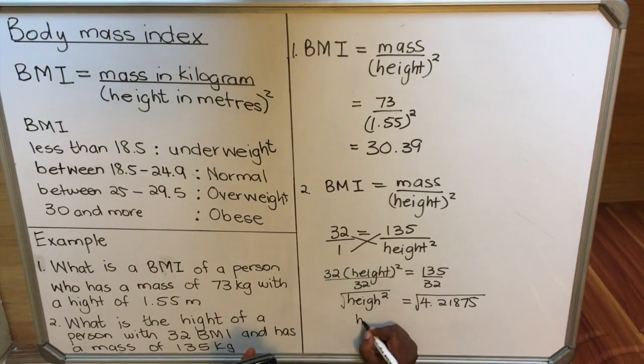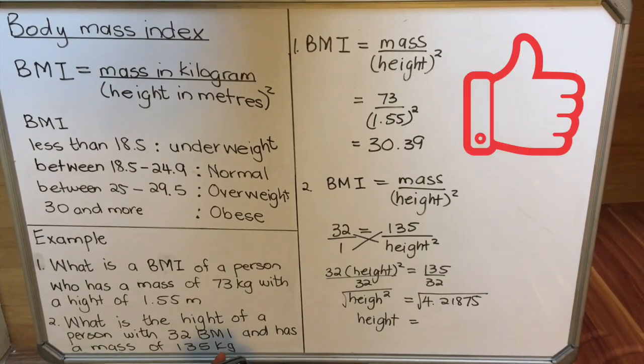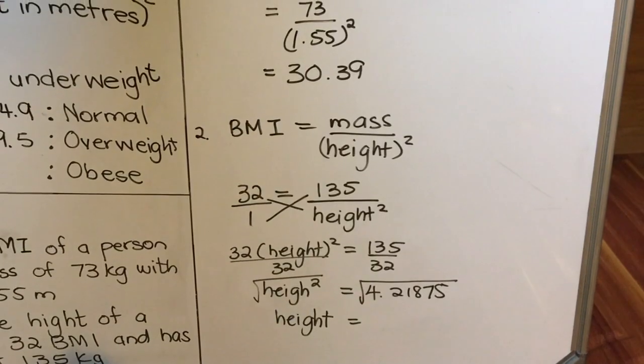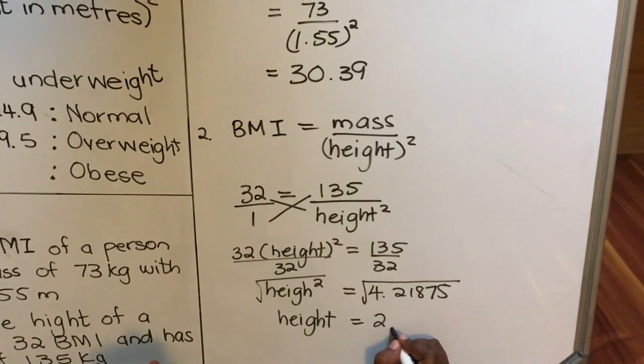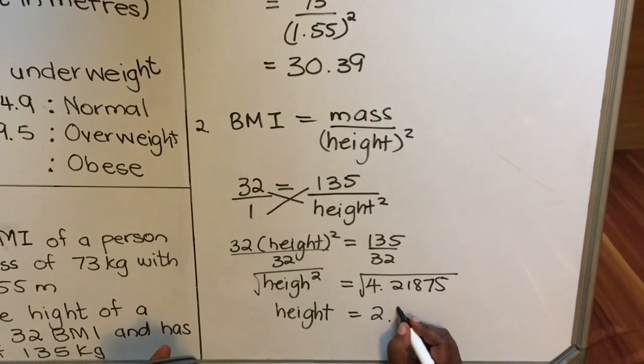I'll be left with height, and then I put this under the square root. Square root of answer—then my answer will be 2.05. When I round it, it will be 2.1 meters.